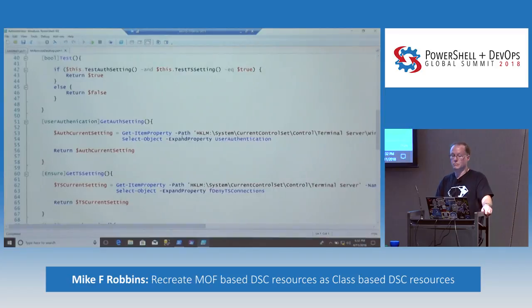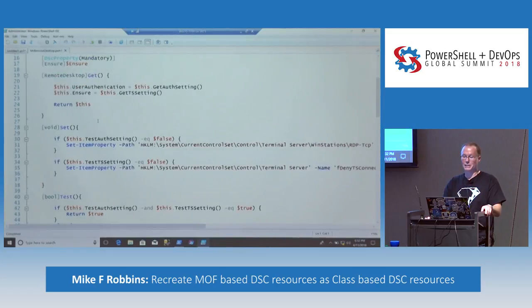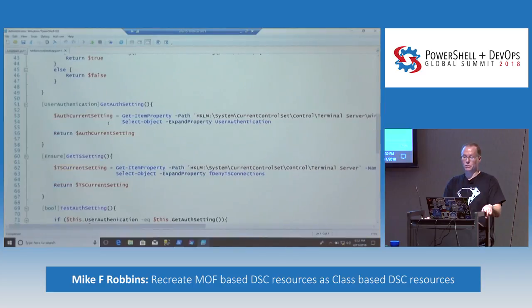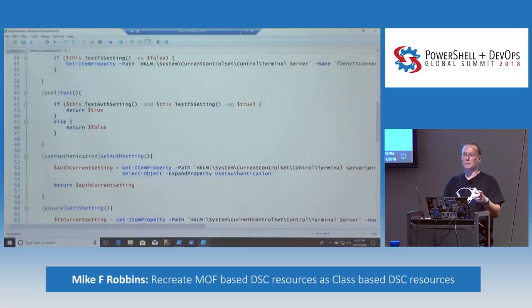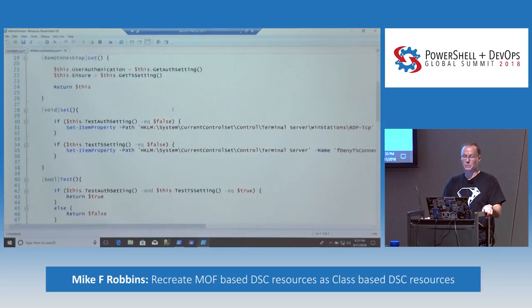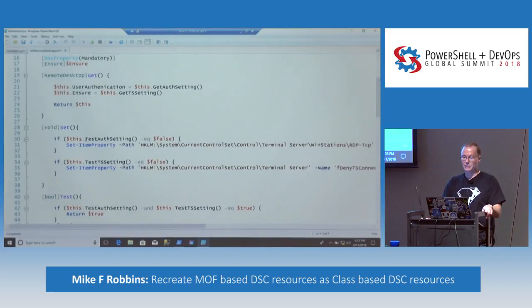So you're actually calling two other methods. And what I did, I actually put some of the code back in. So if you see Set, Set's actually got some of the code back in it, because that code is only used one time — you're not going to set it with the other code. But the code for test and get are very similar. So test-auth and test-ts-setting — I wanted to see if that was called in Get. Actually, it's get-auth and get-ts-setting. The test is called from Set.